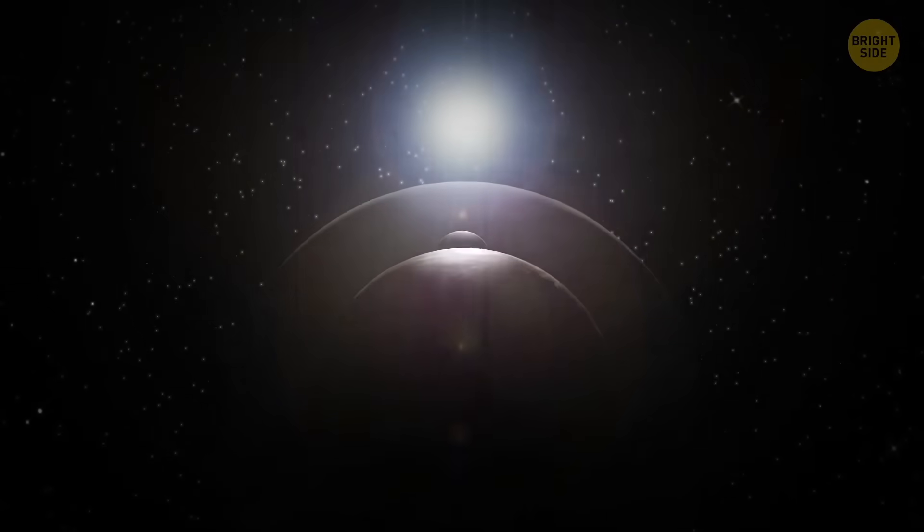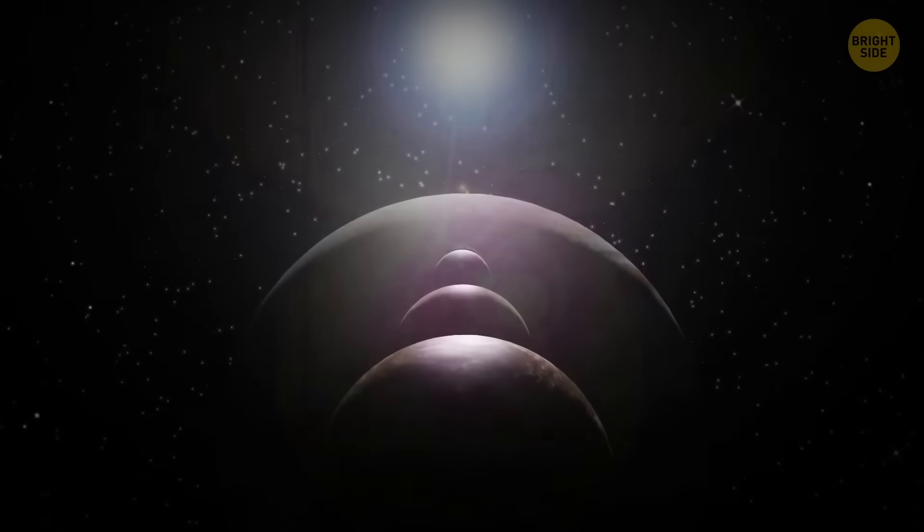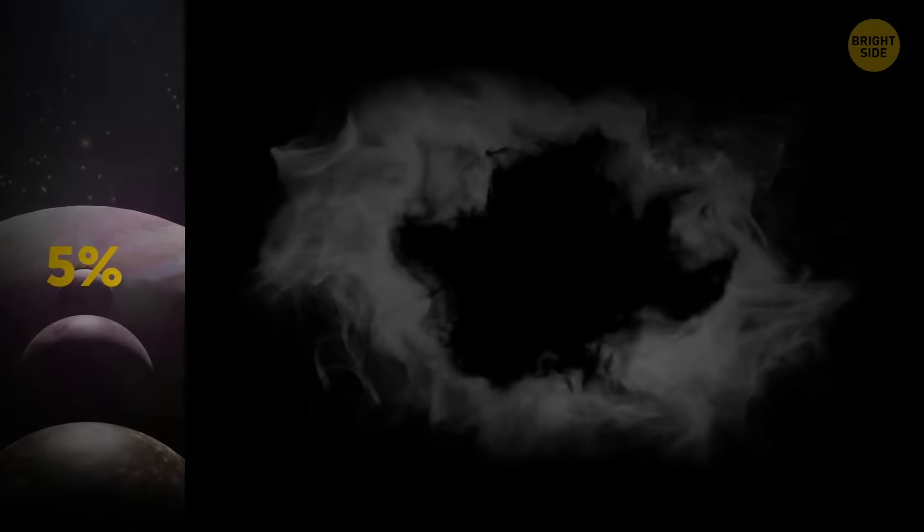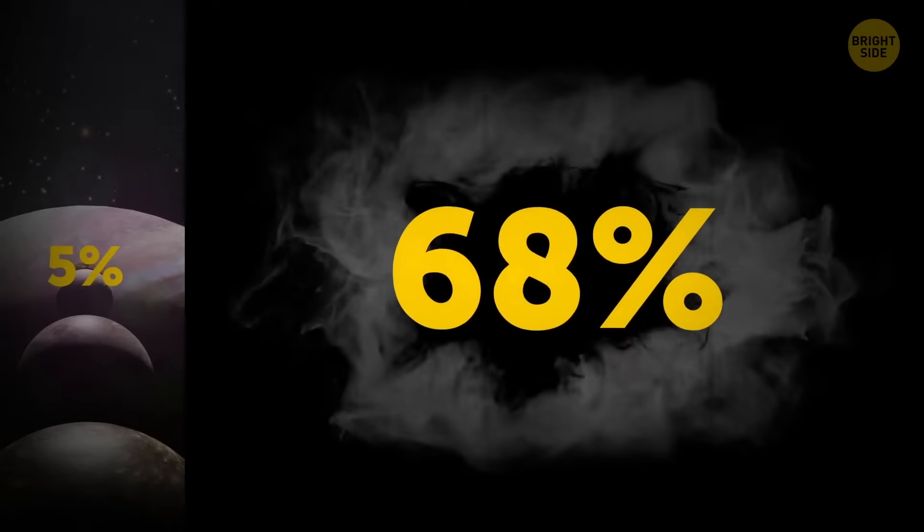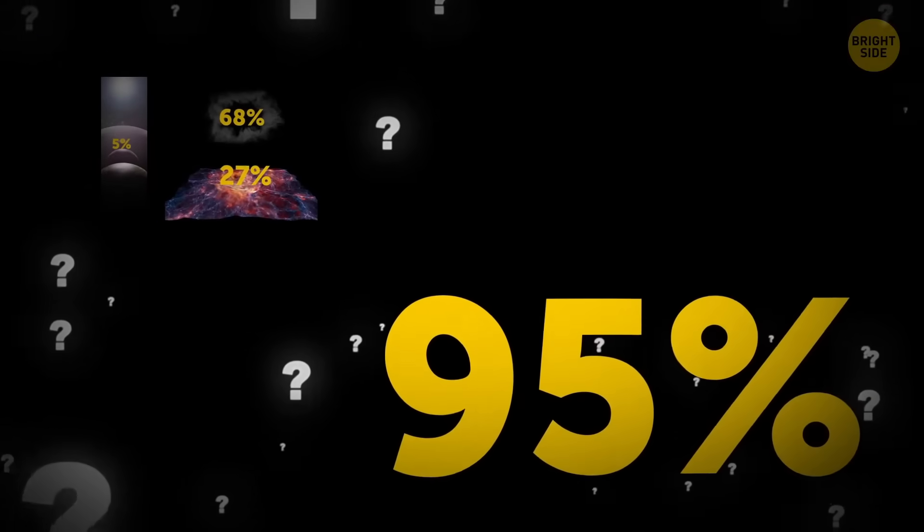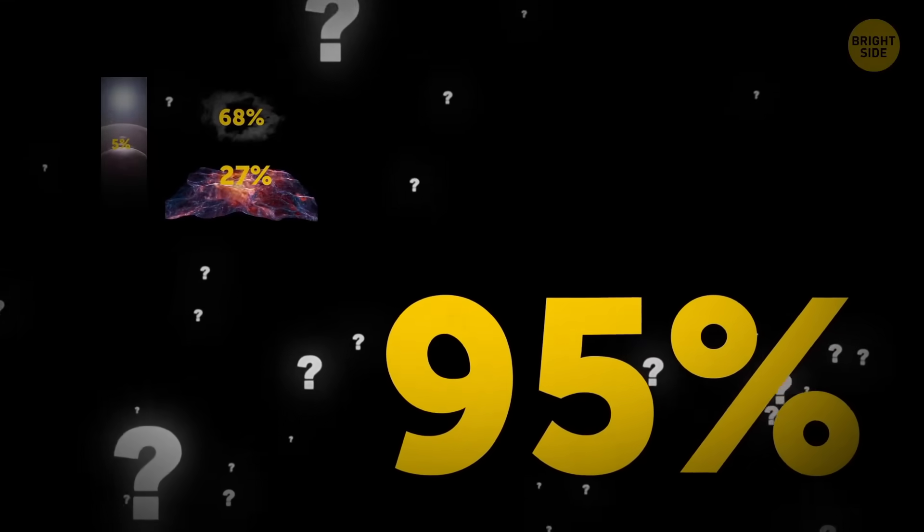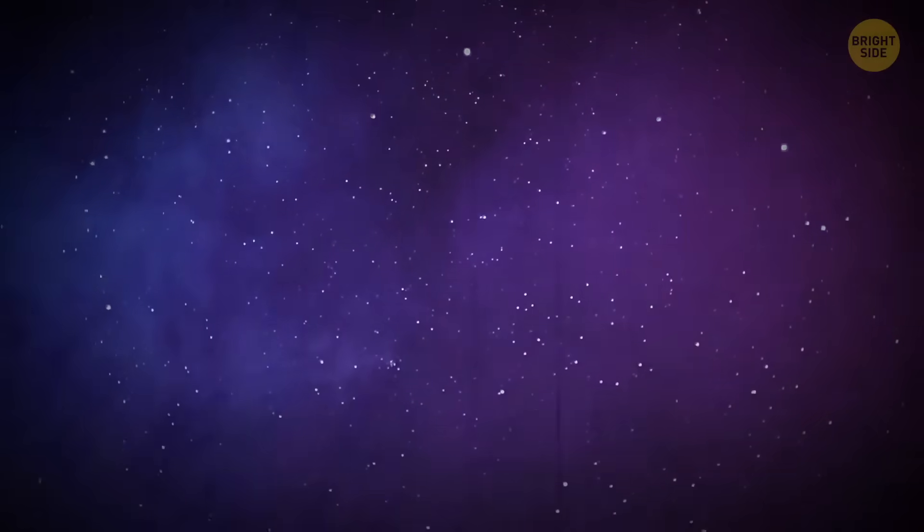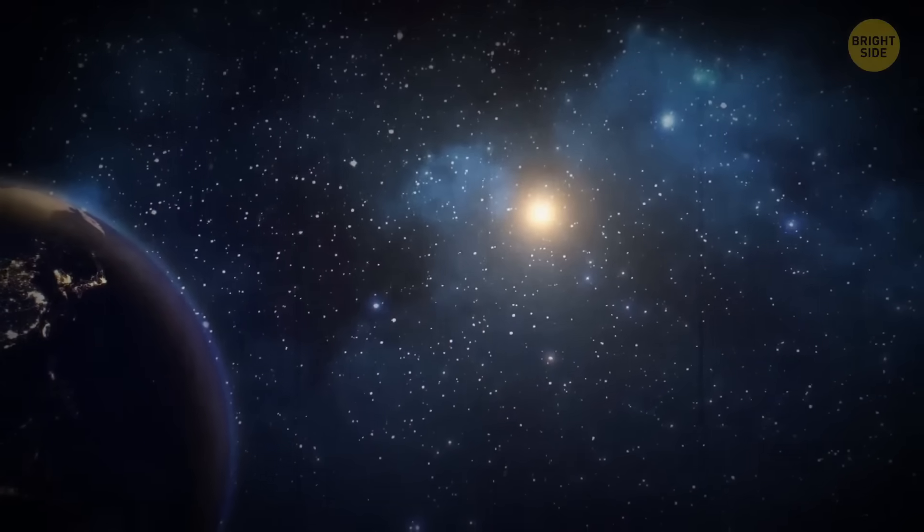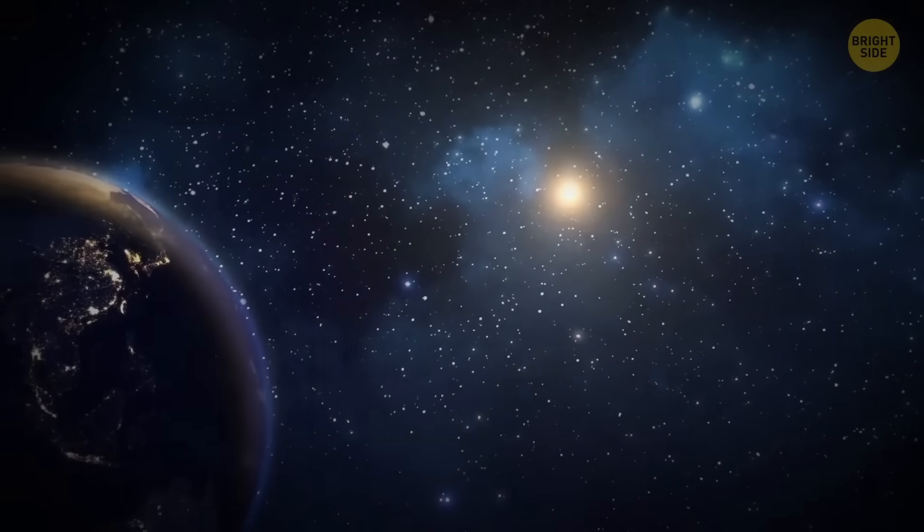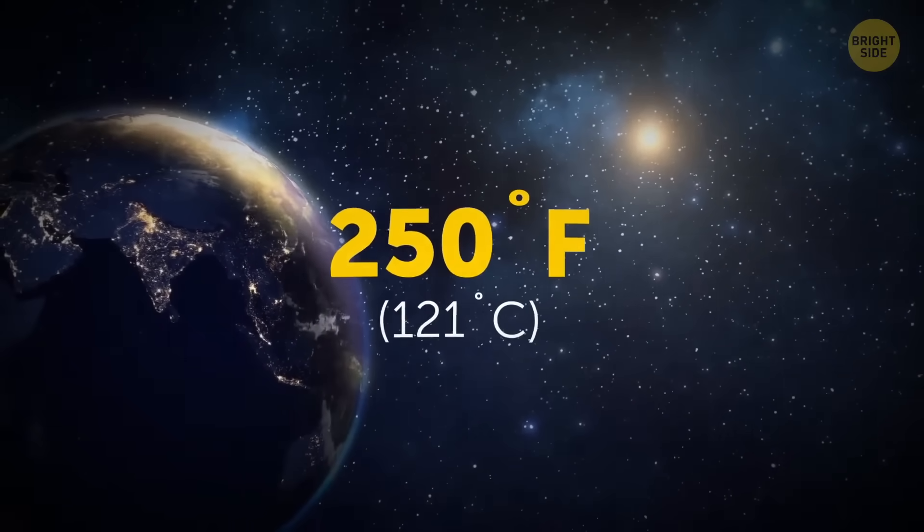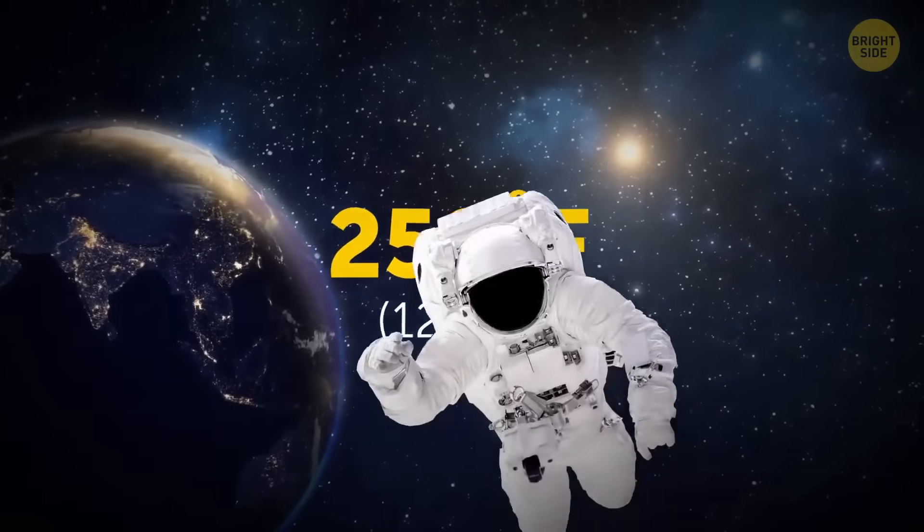Normal visible matter, for example planets and stars, makes up just 5% of the universe. The rest consists of invisible dark energy, that's 68%, and dark matter, about 27%. Add it up, and there's 95% of space we know nothing about. In its darkest areas, space is freezing cold, minus 454 degrees Fahrenheit. But try orbiting Earth in the sunlight, and you'll understand how scorching 250 degrees feel. That's one of the reasons astronauts' spacesuits are white. This color is the best to reflect the heat from the Sun.